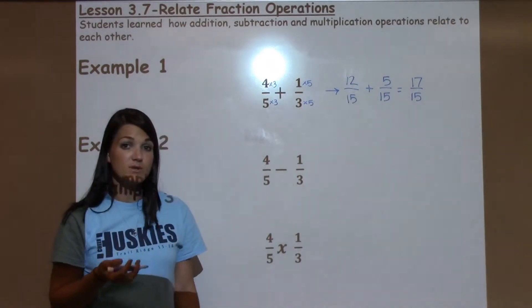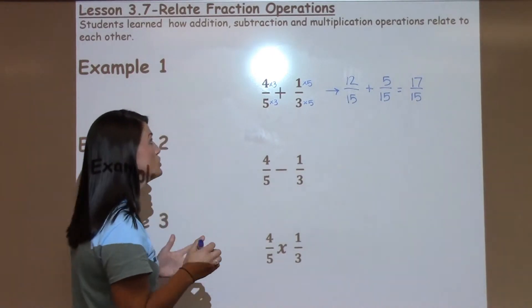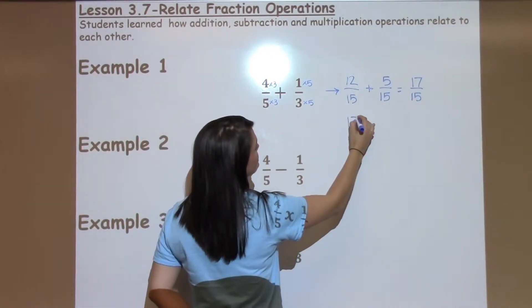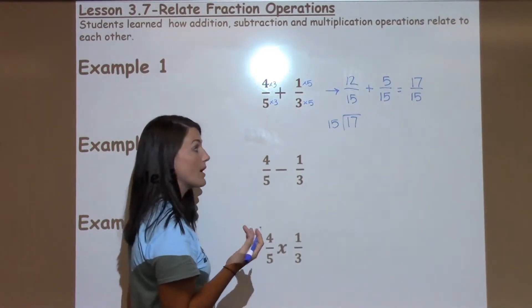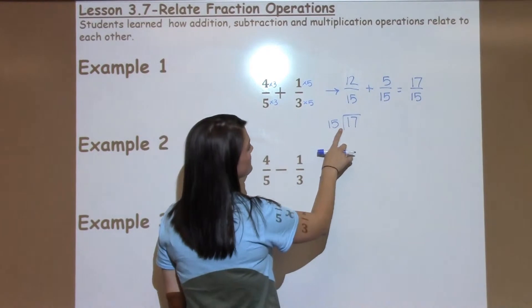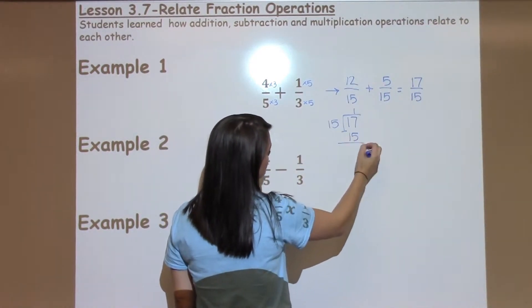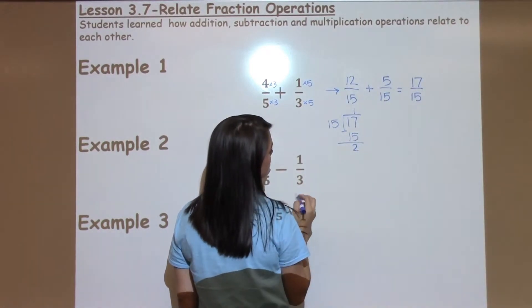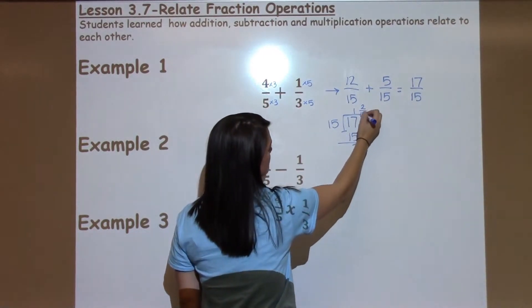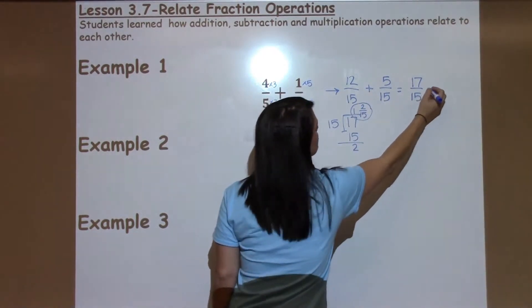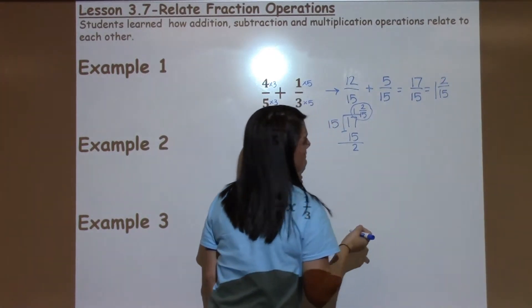Now the problem I've run into here is that this is an improper fraction. 17 over 15, the top is too big. So I'm going to have to take my top number and divide it by my bottom number to come up with a mixed number that would be proper. So 15 goes into 17 one time. 1 times 15 is 15. When I subtract 7 minus 5, I get 2. That becomes my new numerator and my denominator stays the same. So 17 15ths is the same as 1 and 2 15ths for my final answer.